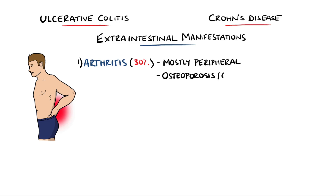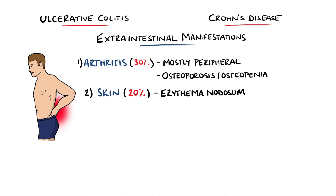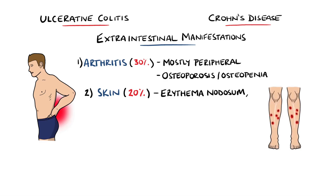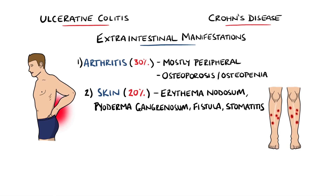Alongside joints, the bones themselves are also affected, with increased rates of osteoporosis and osteopenia. The skin is involved in 20% of cases, including erythema nodosum — where painful red nodules appear on the shins — pyoderma gangrenosum, as well as skin tags, fistulas, and stomatitis.